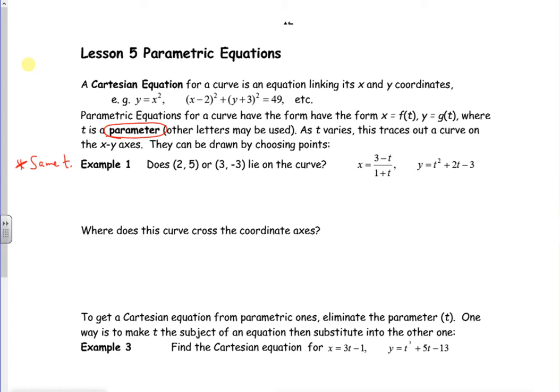So if I find, for this point here, for (2, 5), if I find t for x is 2, let's have a look. So 2 is (3-t)/(1+t). Take that up, 2 times (1+t) is 3-t.